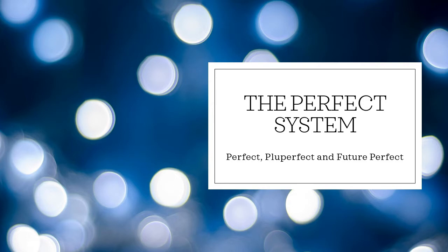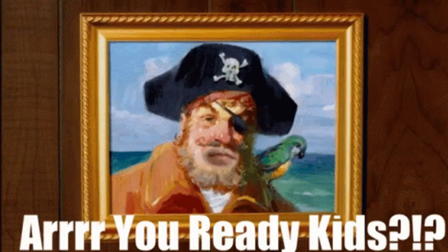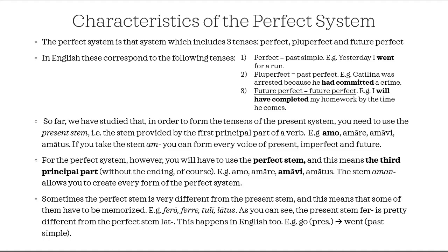Hello everyone and welcome to this new lecture. Today we're going to talk about the perfect system, which is a system that includes three tenses: the perfect, the pluperfect, and the future perfect. This is very important to study because you will find the perfect and the pluperfect a lot of times, especially in historical narrations. The future perfect is rarer but you will find it as well.